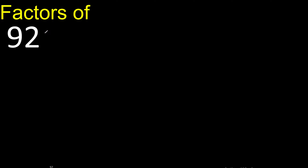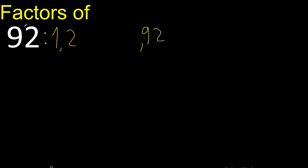Factors of 92. Always start with 1: 92 divided by 1 is 92. Next is 2: 92 divided by 2 is 46.